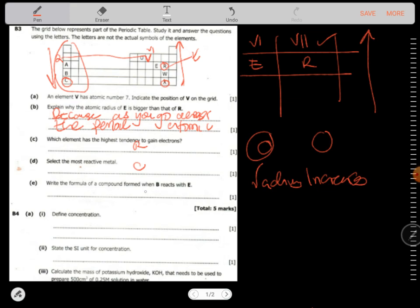Select the most reactive metal. In terms of metals, as you go down, metals become reactive. Remember these are the metals here, so the most reactive metal here is C. Write the formula of the compound formed between B and E. B is in group 1, so it has got a valence of positive 1, while E is in group 6, so it has got a valence of negative 2.